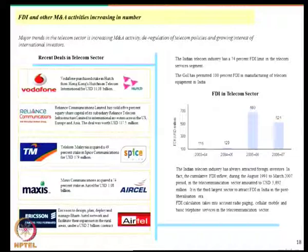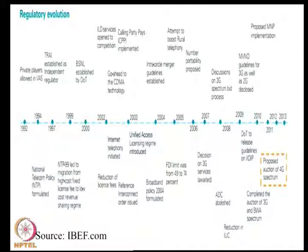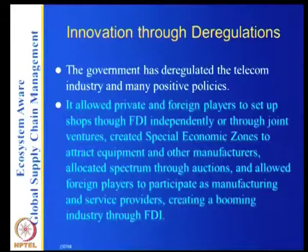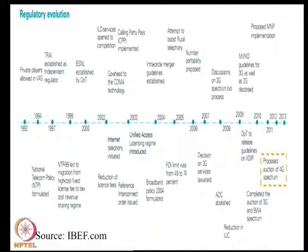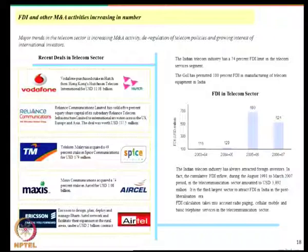The cumulative FDI flow from August 1991 to March 2007 in the telecom sector amounted to 3 billion dollars, making it the largest sector to attract FDI in India in the post-liberalization era. Regulatory innovations allowed foreign players to invest, take stakes, and bring in capital — and the result was a major improvement in the telecom sector.